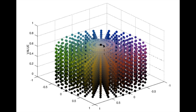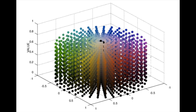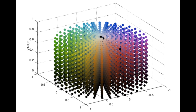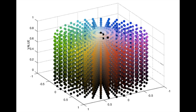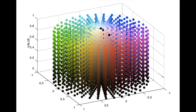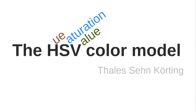From the middle of the cylinder, where the saturation is close to zero, we don't have a specific color, but blacks and whites. And as the saturation differs from the center, we have more defined colors. We can create all the possible colors by converting from the RGB color model to this HSV color space. This is the HSV color model. Thank you.